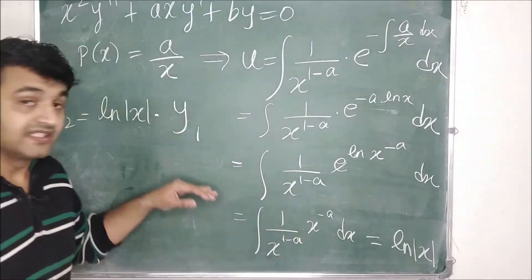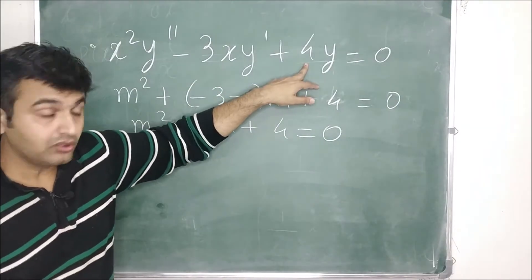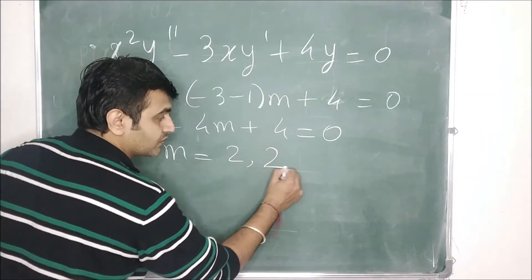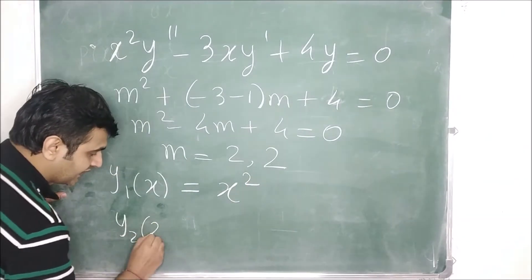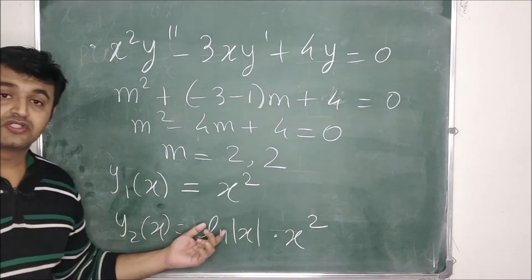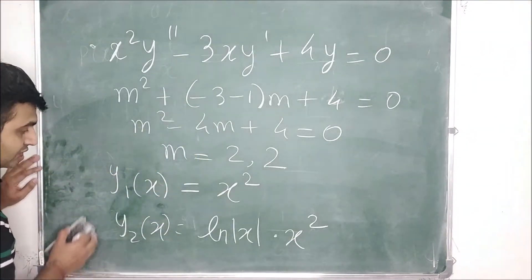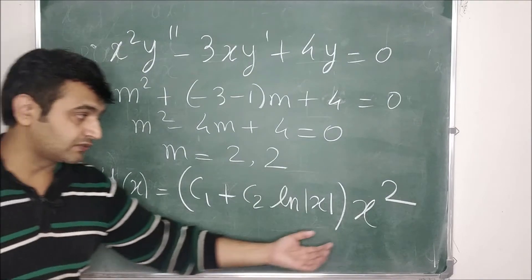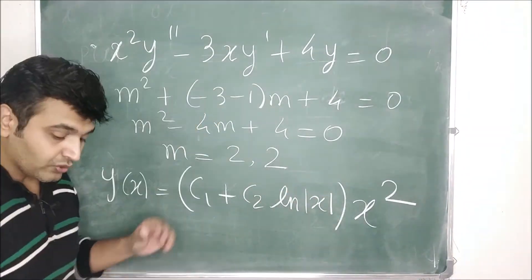Example: x²y'' − 3xy' + 4y = 0. Here a = −3, b = 4. The auxiliary equation m² + (−3−1)m + 4 = 0 simplifies to (m−2)² = 0, so the repeated root is m = 2. Thus y₁(x) = x² and y₂(x) = ln(x)·x². The general solution is y(x) = (c₁ + c₂ ln x)x² = c₁x² + c₂x² ln x.